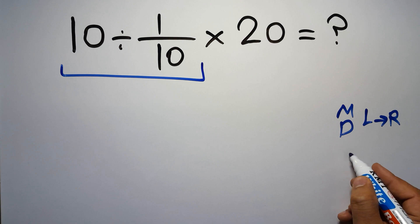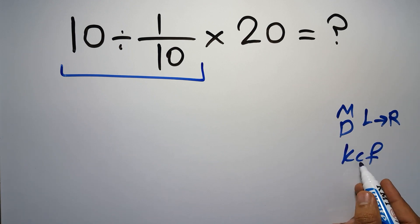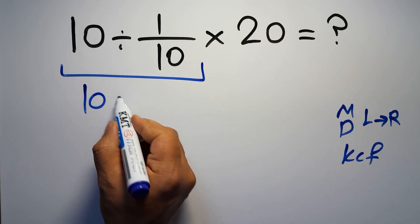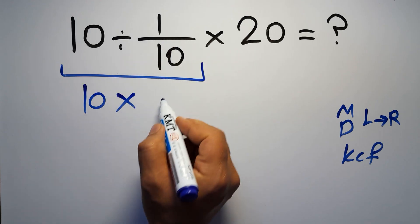According to the KCF rule, K stands for keep, C stands for change, and F stands for flip. We can write: keep the first fraction, change division to multiplication, and flip the second fraction.